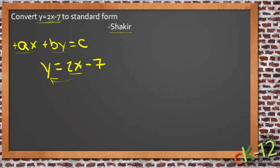So y equals 2x minus 7. If we first take that 2x and move it to the other side, we're going to need to subtract it from both sides to move it over, so we'll have negative 2x plus y equals negative 7.